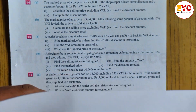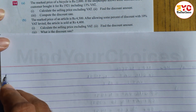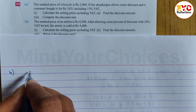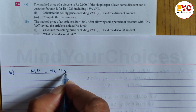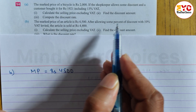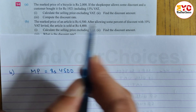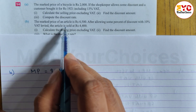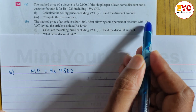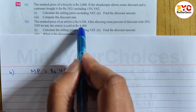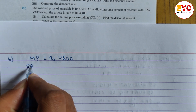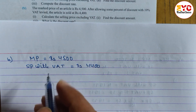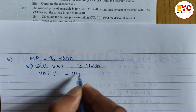Now let's look at question number 14B, which is a similar type of question. The marked price of an article is Rs. 4500, so MP = Rs. 4500. After allowing some percent of discount, the article is sold at Rs. 4400 including 10% VAT. So SP with VAT = Rs. 4400 and VAT rate = 10%.